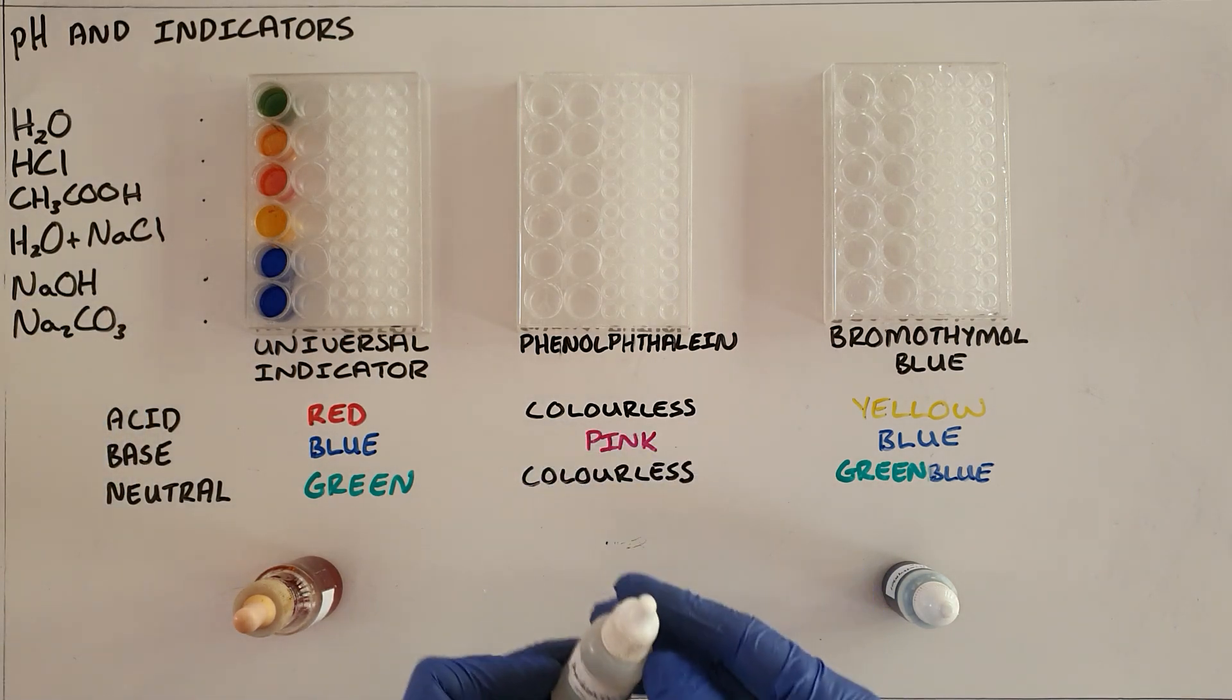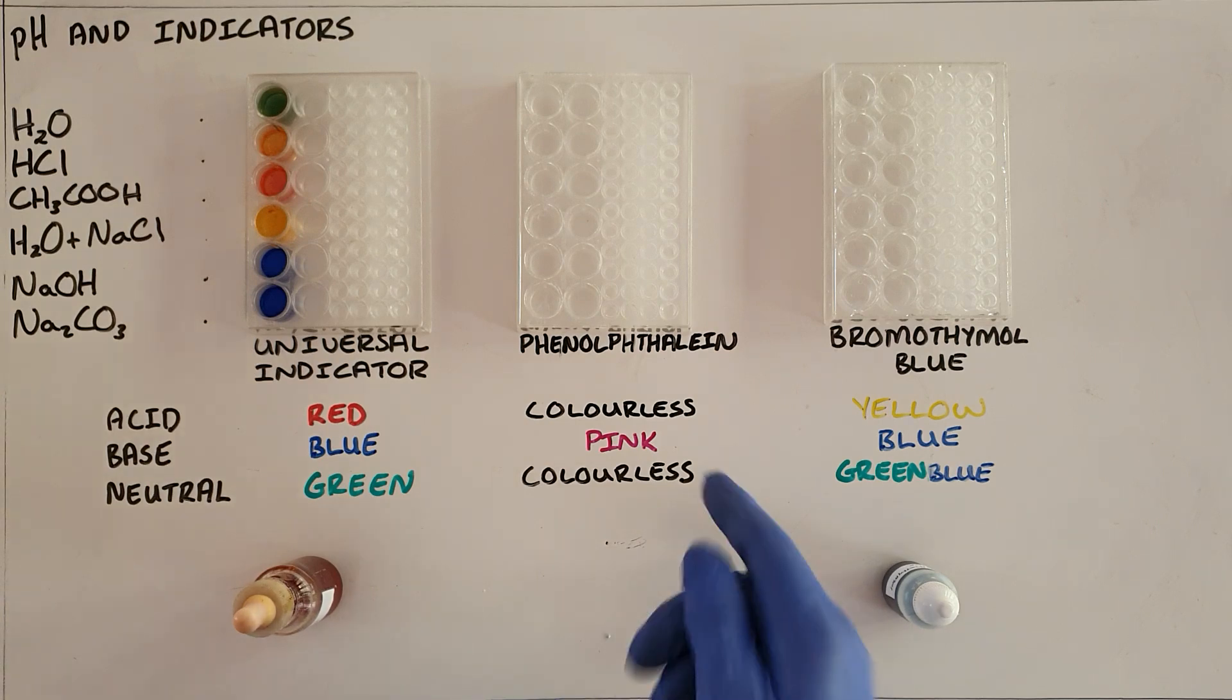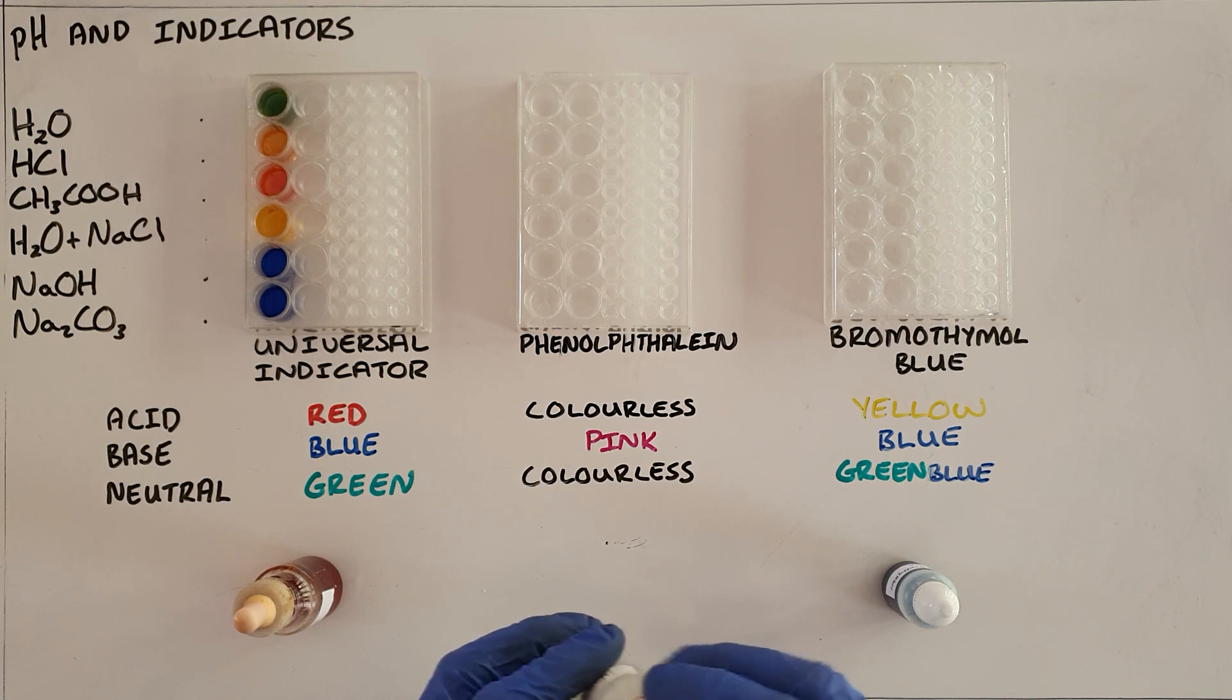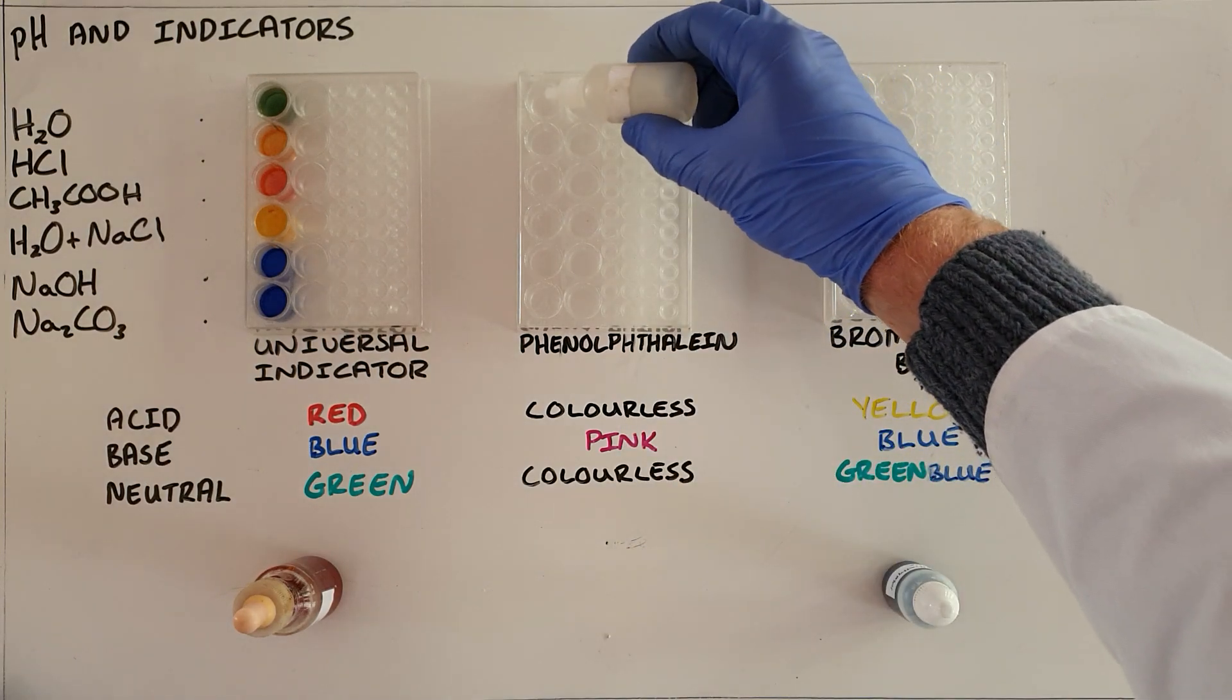The next indicator that we're using is called phenolphthalein. This we expect to remain colorless in an acid and in a neutral substance and only to turn pink in a base. So we can now see if that is true.